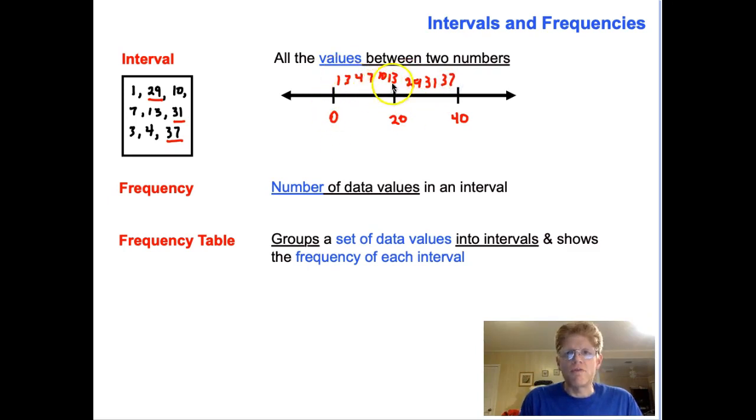The interval is all of the values, but the frequency is the number of data values in an interval. So, for example, in this particular interval of 0 to 20, we have 1, 2, 3, 4, 5, 6 values. So the frequency of the interval 0 to 20 is 6, and the frequency of the interval 21 through 40 is 1, 2, 3. We have three values there.